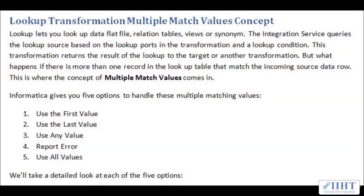In the previous videos we saw the basic concept of the lookup transformation and a simple example of it. Lookup can update data from flat files, relational tables, views, or synonyms. The integration service queries the lookup source based on the lookup ports in the transformation and a lookup condition, and returns the result to the target or another transformation. But what happens if there is more than one record in the lookup table that matches the incoming source data row?